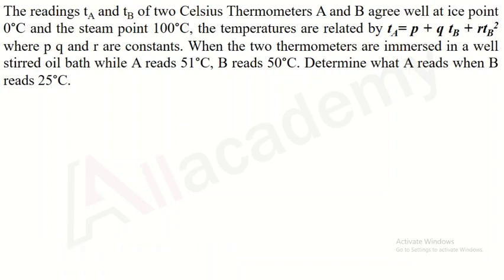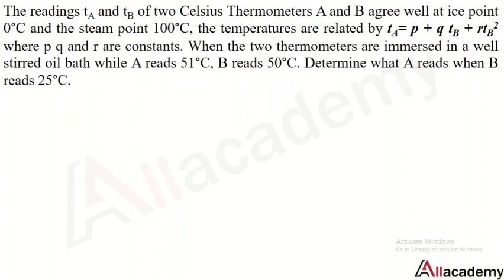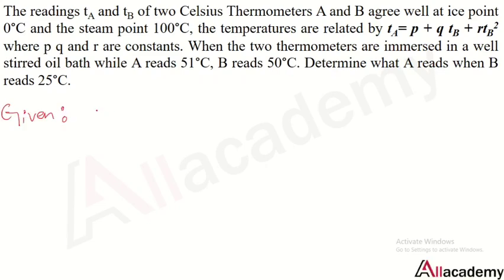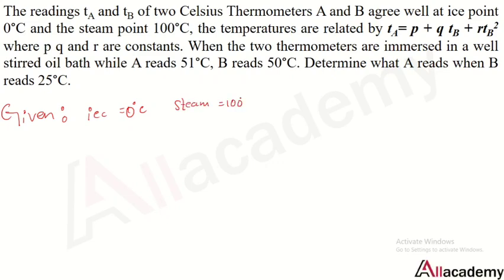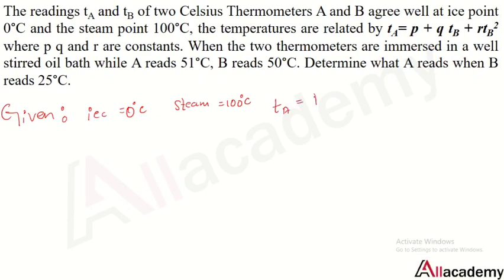We need to determine what A reads when B reads 25°C. So we need to identify the constants p, q, r and then find the temperature on thermometer A when thermometer B reads 25°C. The given thermometric equation is: ta = p + q·tb + r·tb².